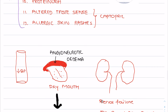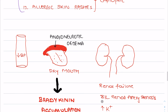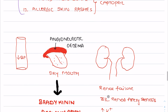This is the diagrammatic representation of adverse effects of ACE inhibitors: first-dose hypotension, angioneurotic edema, and dry cough due to accumulation of bradykinin; renal failure especially in bilateral renal artery stenosis; and renal failure due to hyperkalemia.